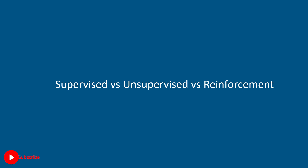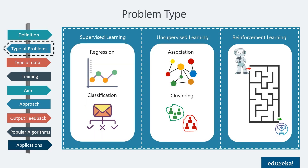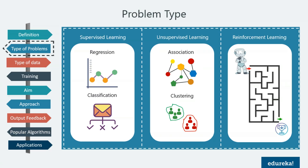Now let's look at the differences between supervised, unsupervised, and reinforcement learning. Supervised learning is a type of machine learning wherein we teach the machine using labeled data — both input and output are labeled. In unsupervised learning, the data provided to the machine is not labeled, and the machine has to learn without any supervision by discovering hidden patterns and trends. In reinforcement learning, an agent is put in an unknown environment, and it has to explore that environment by taking actions and transitioning from one state to another to get maximum rewards.